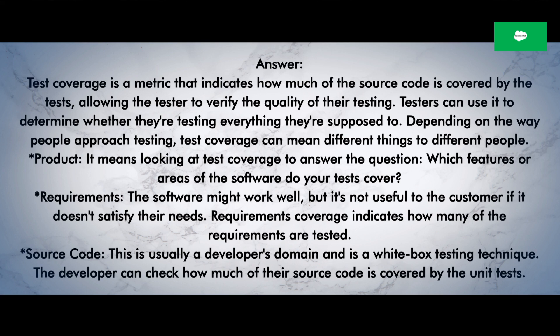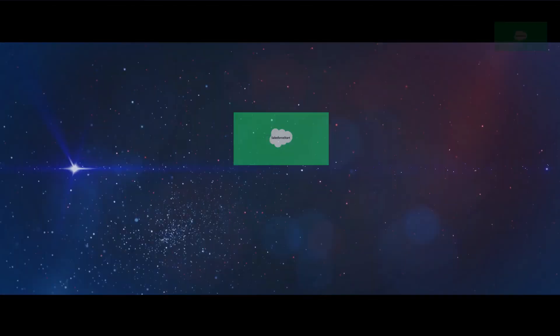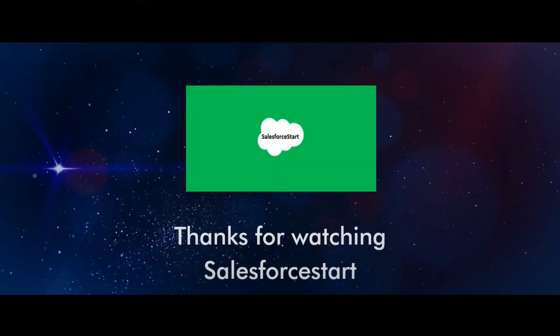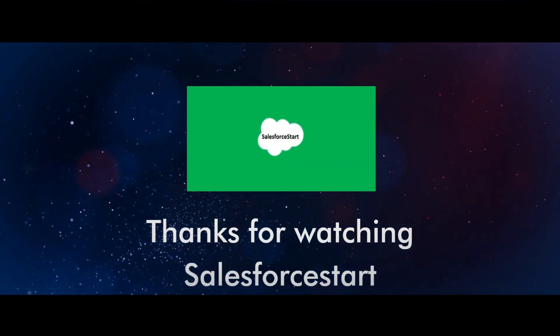Requirements: the software might work well, but it's not useful to the customer if it doesn't satisfy their needs. Requirements coverage indicates how many of the requirements are tested. Source code: this is usually a developer's domain and is a white-box testing technique. The developer can check how much of their source code is covered by the unit tests.